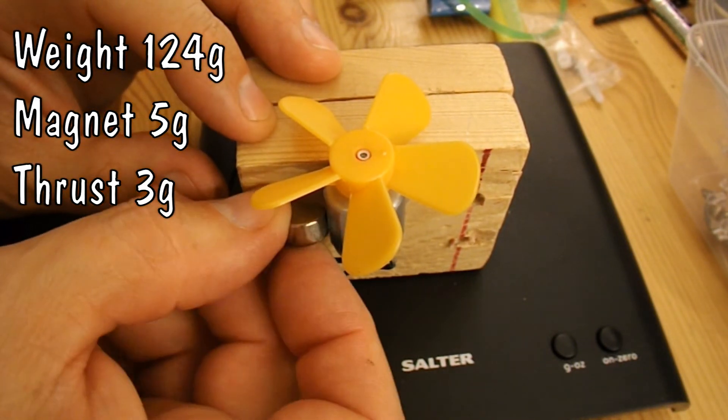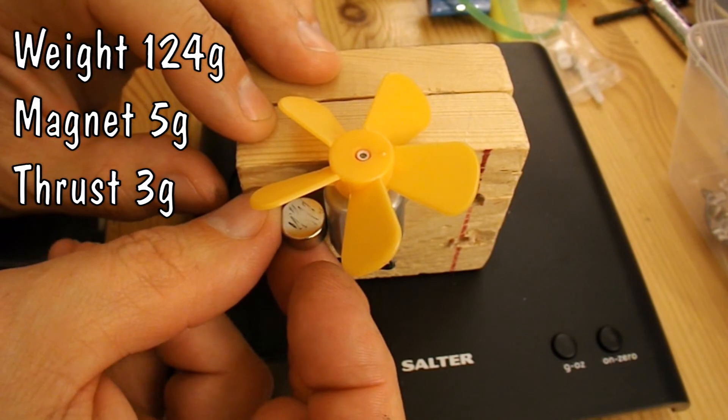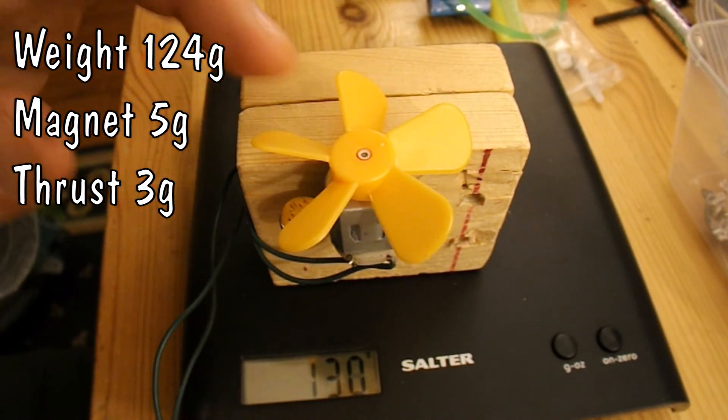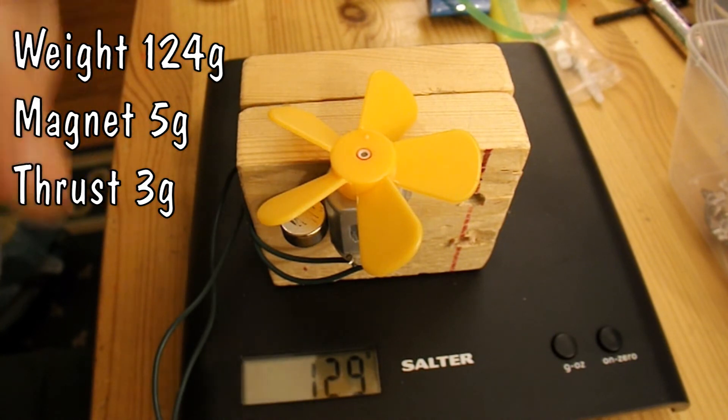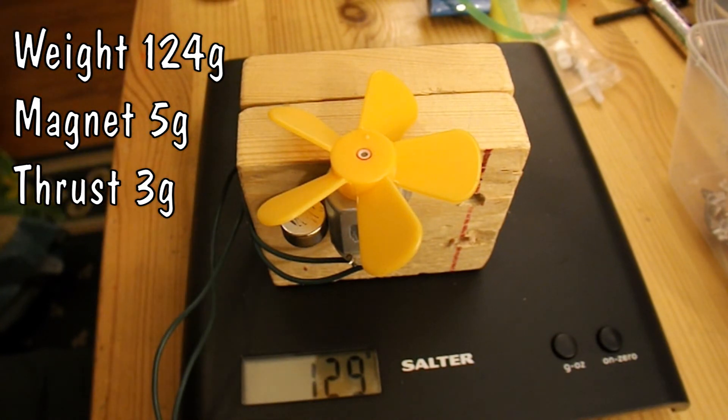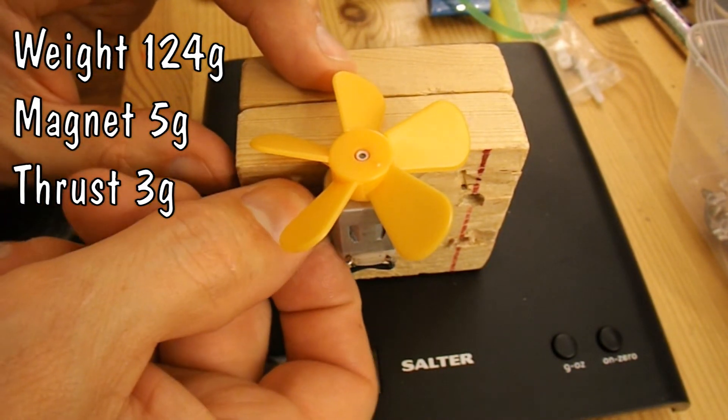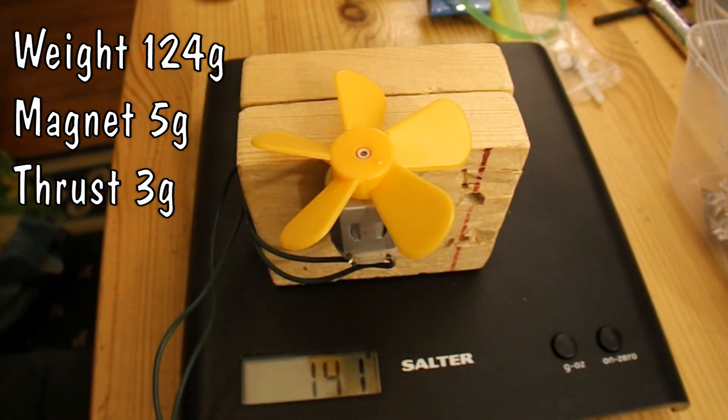I'll just turn that magnet round in case it makes any difference the other way round. 129, 132. So that made no real difference. It added some weight but we only got three grams of thrust.